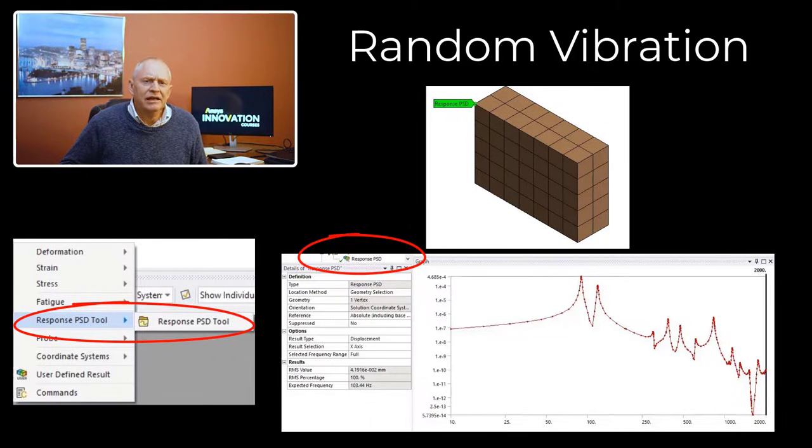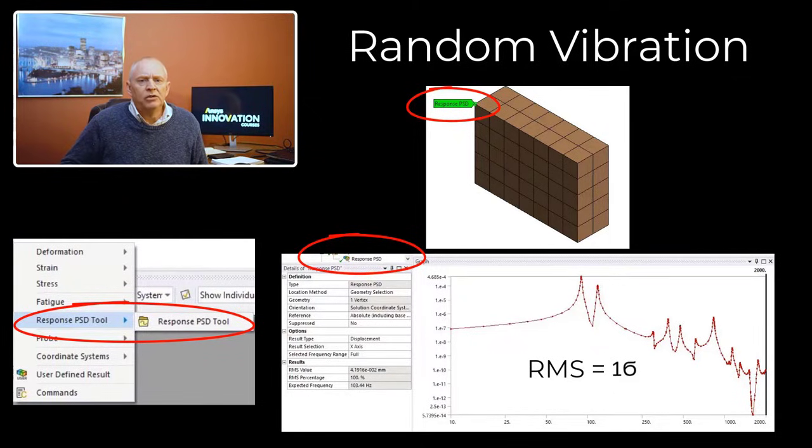Response PSD is like an input PSD, but it represents the output measured at a given location. The plot provides information as to where the average power is distributed as a function of frequency. The square root of the area under the response PSD is the so-called root mean square or RMS value. It is a 1 sigma or 1 standard deviation value in a statistical term.